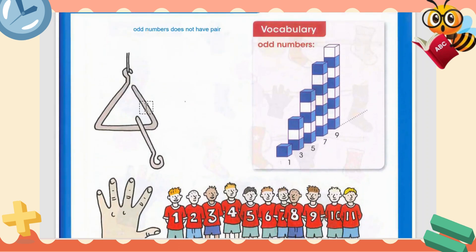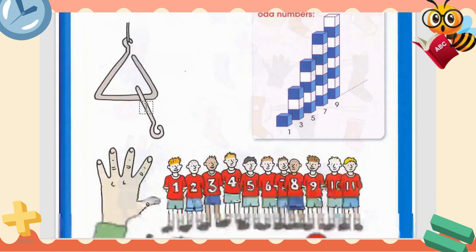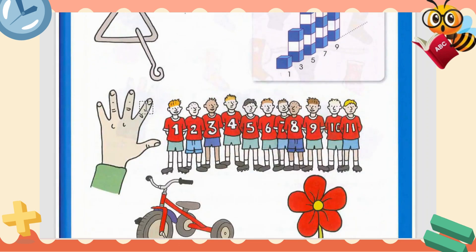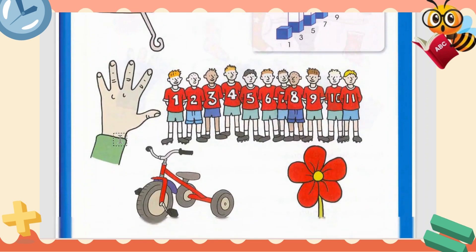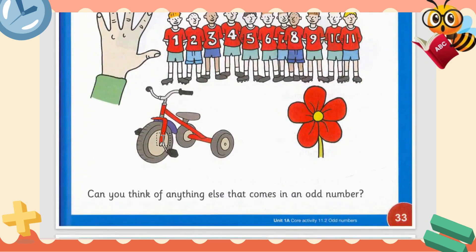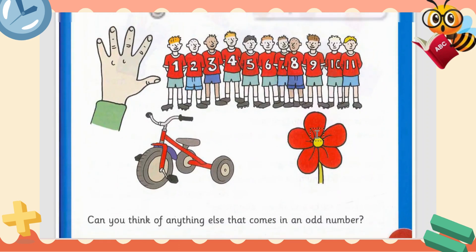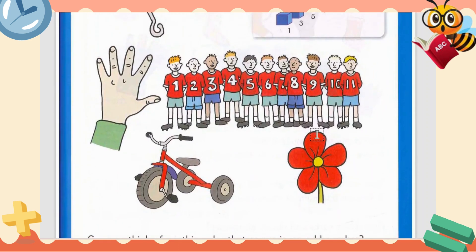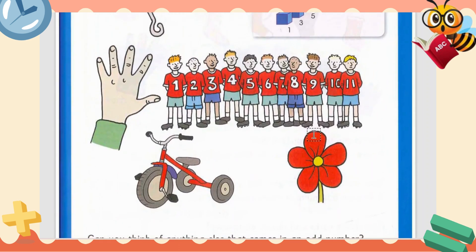For example, this hook is one, so it's not a pair. One hand — not a pair. A bicycle — not a pair. A flower — one, not a pair. And how many boys are here? Eleven. These are also not a pair.